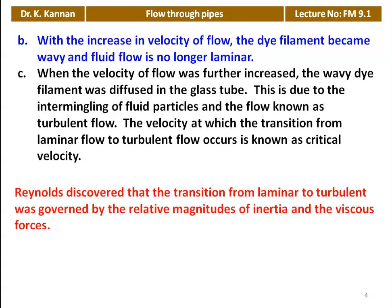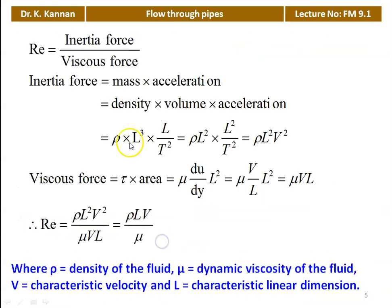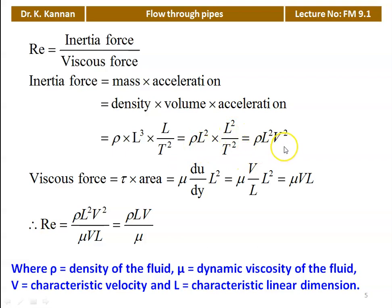Reynolds discovered that the transition from laminar to turbulent was governed by the relative magnitude of inertia and viscous forces. He related these forces and defined a non-dimensional number called the Reynolds number: Re = inertia force / viscous force. Inertia force = mass × acceleration = ρ·L³·(L/t²) = ρ·L²·V². Viscous force = shear stress × area = μ·(du/dy)·L². This gives Re = ρ·V·L / μ, where μ is the dynamic viscosity, V is the characteristic velocity, and L is the characteristic linear dimension.